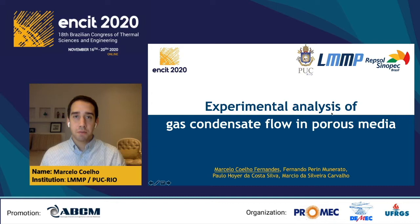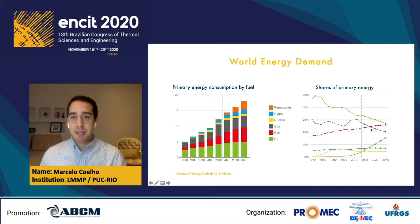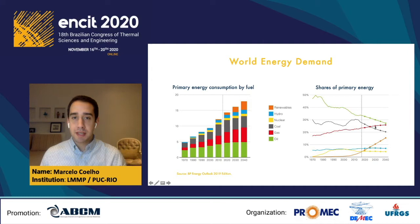To start, we need to think about the world energy demand. We have here two images from BP Energy Outlook — the first shows primary energy consumption by fuel, and the second shows shares of primary energy. We can see gas in red and oil in green, and both are going to increase over the next years. However, the share of oil is going to decrease while the share of gas will increase. Gas will have the second highest increase in the next years, only behind renewables shown in orange. By 2030, the share of gas is going to be 2.5 times higher than renewables energy.